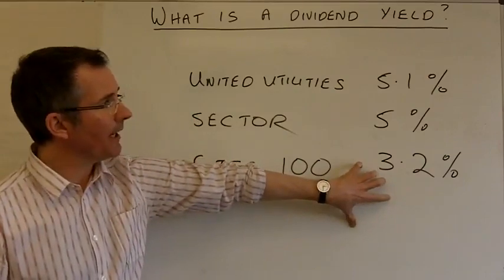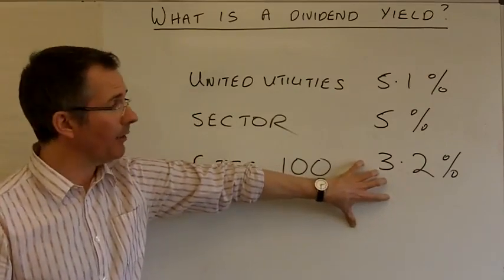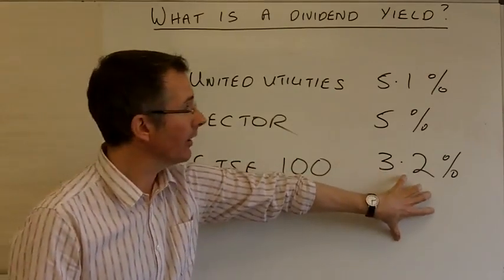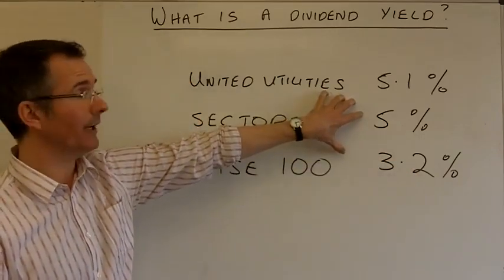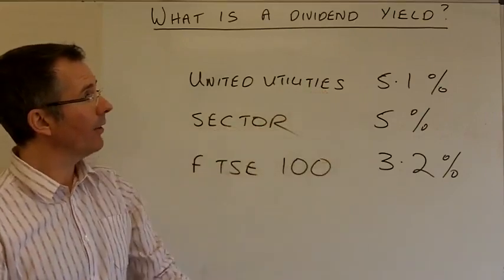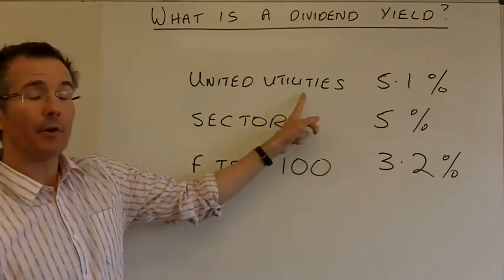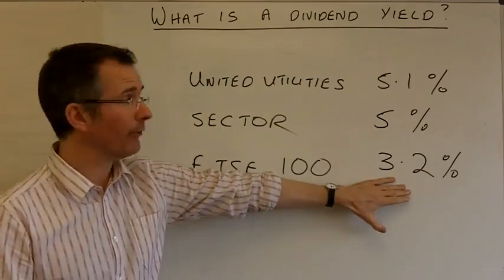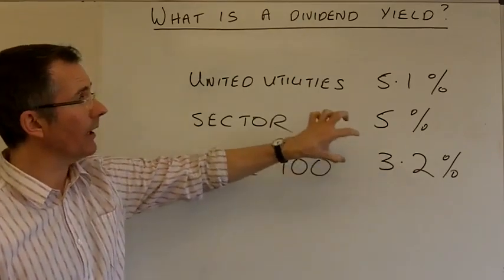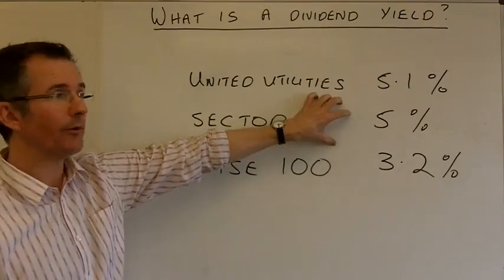Now, suddenly, I'm getting a picture. The average company in the UK pays 3.2%. The average utility company pays 5%. And United Utilities is the average utility company on that basis. So, maybe this is quite generous. I'm thinking, well, great. Rather than buy an average FTSE 100 company with a 3.2% yield, let's go hunting in the utility sector for something with a juicier yield.